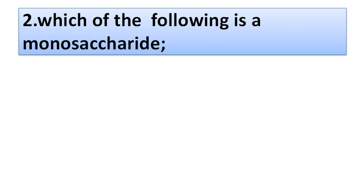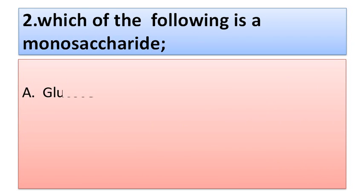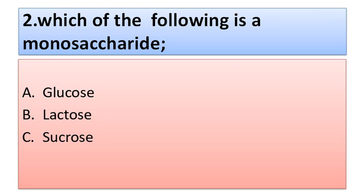Question number two: which of the following is a monosaccharide? Option A is glucose, option B is lactose, option C is sucrose, and the last option is maltose. As you know, glucose is a monosaccharide, so option A is correct.